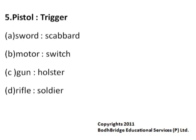Pistol is to Trigger. The options are: Sword is to Scabbard, Motor is to Switch, Gun is to Holster, and Rifle is to Soldier. A Trigger is a small projecting tongue in a firearm that actuates the mechanism of the Pistol. A Scabbard does not actuate the mechanism of a Sword, nor does a Holster do that to a Gun. But a Switch actuates the performance of a Motor. Hence that's the correct answer.